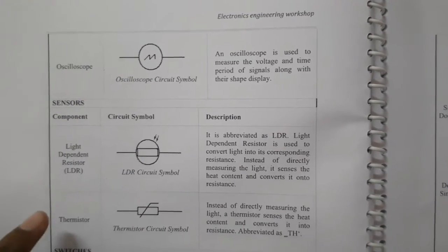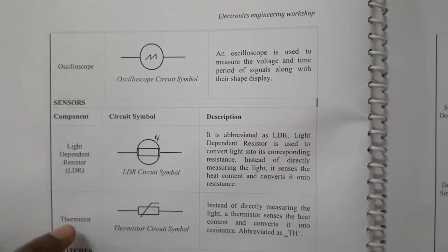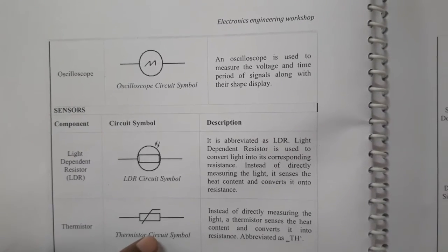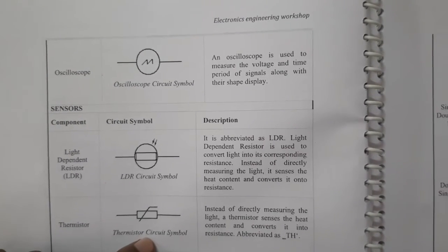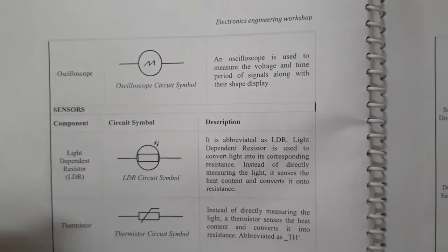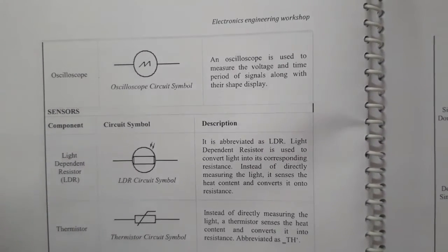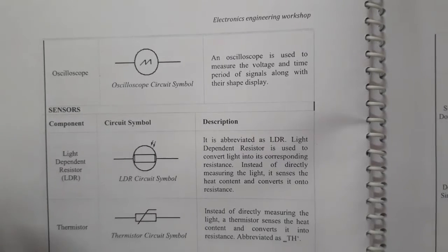Next is thermistors — this is the circuit symbol. A thermistor converts heat content into a change in resistance.